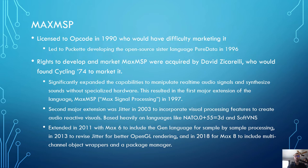In 2018, Max 8 came out and was expanded to include multi-channel object wrappers and a package manager. This means you could take one oscillator object, put it in the MC wrapper, and say you now want that one sine wave to instead generate 128 sine waves, all deviating slightly in frequency to create a cool binaural beating effect, then sum it down to two channels.